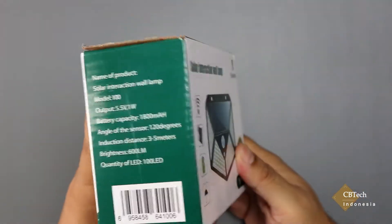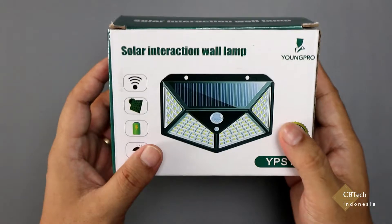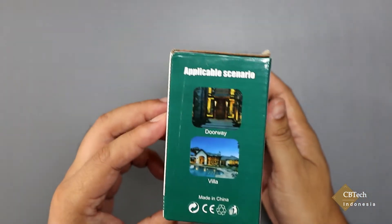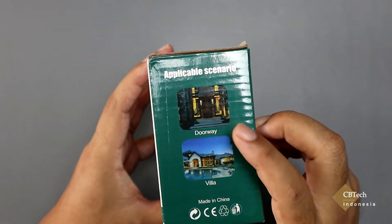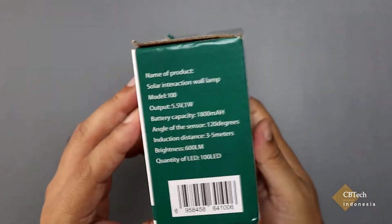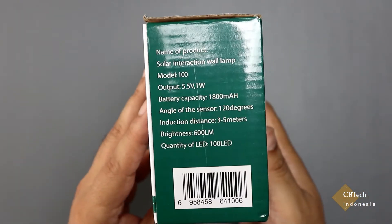Jadi jumlah lampu LED ini ada sebanyak 100 buah. Jika kita perhatikan boxnya sangat simpel saja, hanya seperti ini ada gambar lampunya. Kemudian begitu juga cara penggunaannya atau tempat penggunaannya. Kemudian ini merupakan spesifikasi dari lampu LED tersebut.